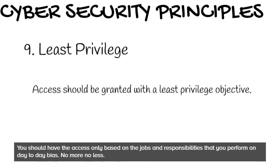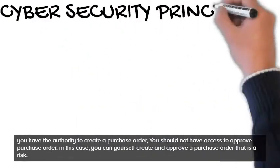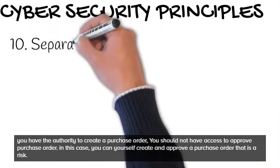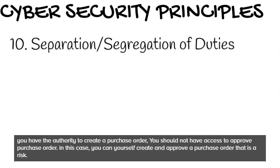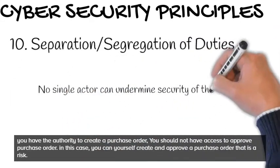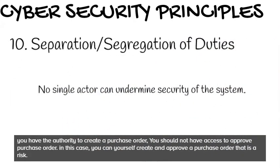10. Separation of duties. No single actor can undermine the security of the system. For example, if you have the authority to create a purchase order, you should not also have access to approve a purchase order — otherwise you could create and approve it yourself, which is a risk.